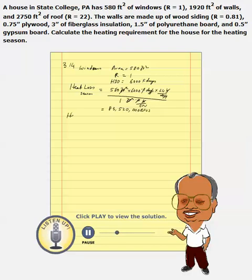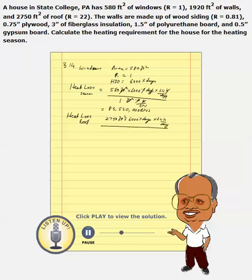Similarly, we can calculate heat loss through the roof. The area of the roof is given as 2,750 square feet, times 6,000 degree Fahrenheit days, times 24 hours per day, divided by an R-value of 22. When you do this calculation, we lose about 18 million BTUs through the roof.